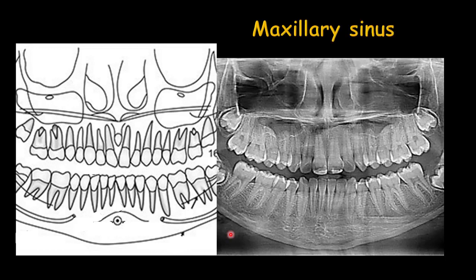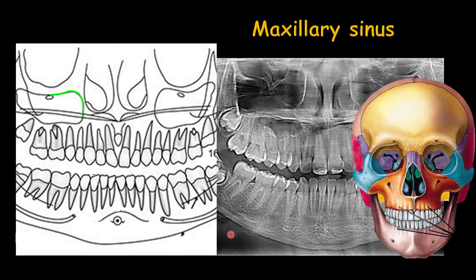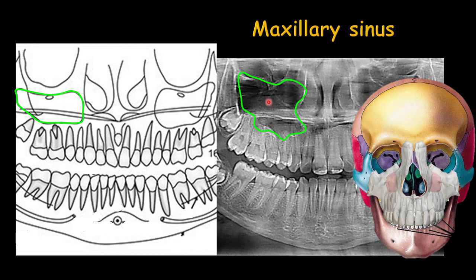The maxillary sinus can be detected as a cortical bone. You can see it in the schematic view and in this panoramic radiograph as a cortical bone. It can sometimes be pneumatized in the alveolar process. The maxillary sinus should be clear and radiolucent. This is very important because if it's radiopaque, it can sometimes indicate there is a disease starting inside the maxillary sinus.